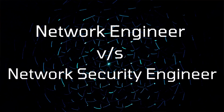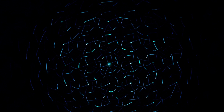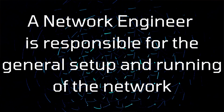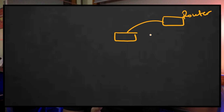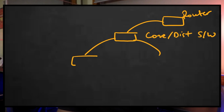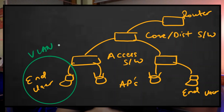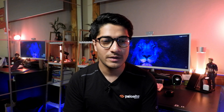A network engineer is someone responsible for maintaining, running, troubleshooting, and administering the network. They perform routing and switching configurations, implement VLANs, set up wireless networks for an organization — pretty much ensuring the upkeep and running of a network as a whole.